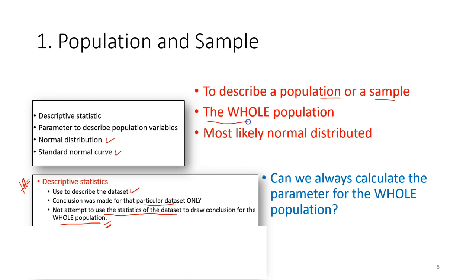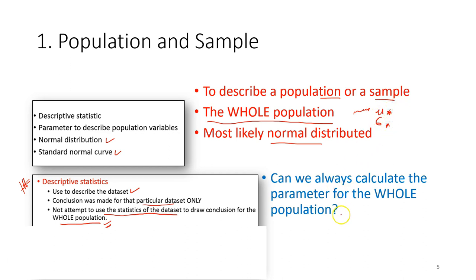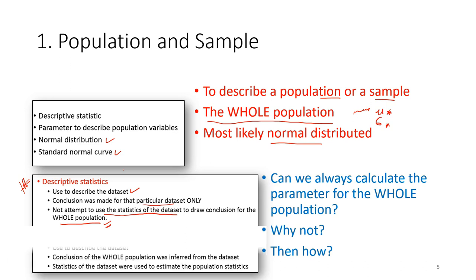Theoretically speaking, we can calculate the mean and standard deviation for the entire population. For example, we can calculate the mean body height and standard deviation for all citizens in Malaysia. When we get that data, it's more likely to be normally distributed. However, practically speaking, are we able to calculate the parameter for the entire population? That would mean measuring the body height of every citizen, which is not practically possible.